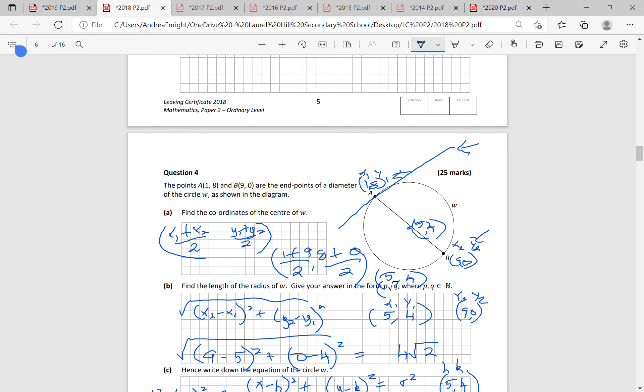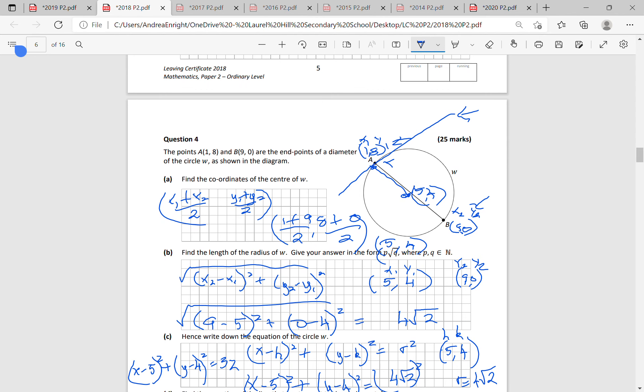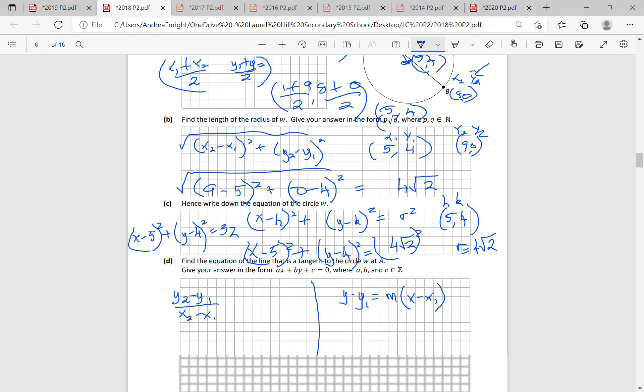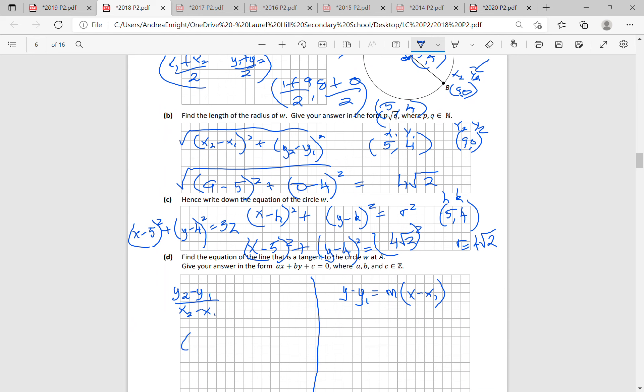In order to get the equation of a line, you need a slope and a point. We have a point, we don't have a slope and we can't use the slope formula to get the slope of that line because we've only one point. But what we can do is we can get the slope of the line from here to here. If you get the slope of that line, it's perpendicular. The radius is perpendicular to the tangent at the point of contact. So if you turn it upside down, change the sign, you get the slope of the line you're looking for.